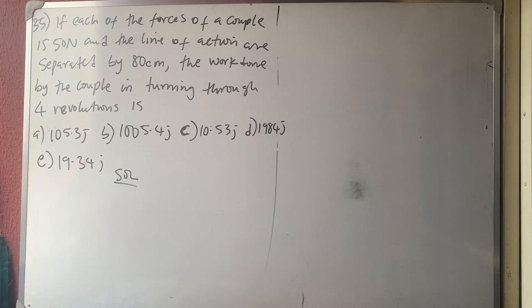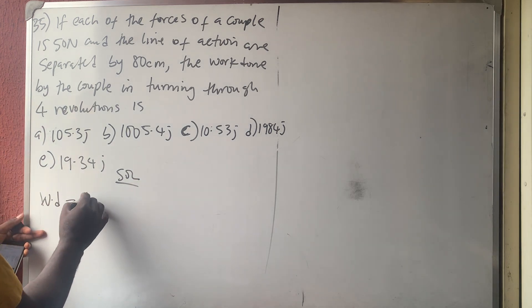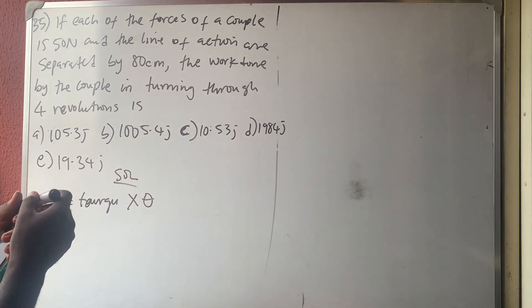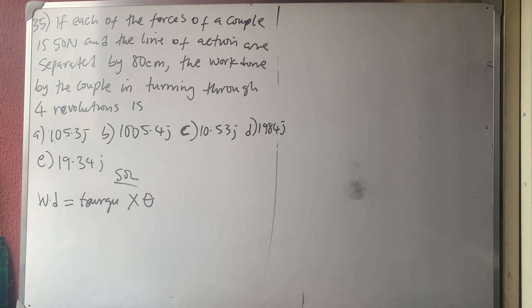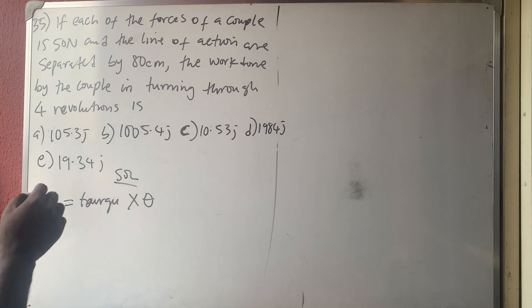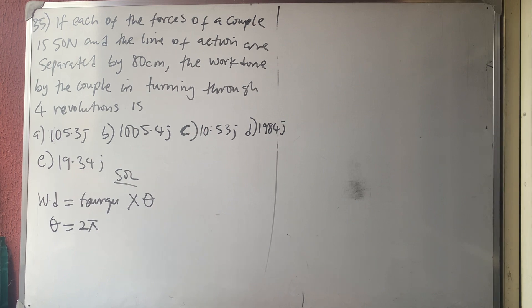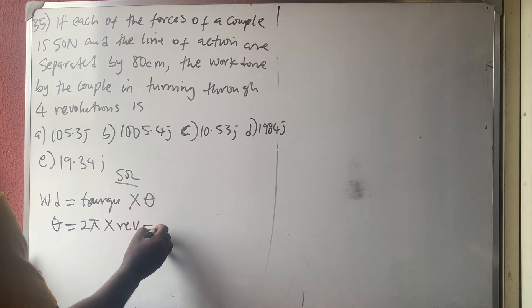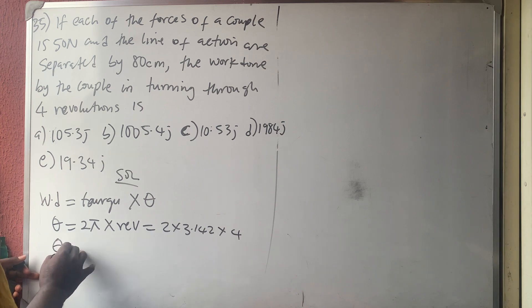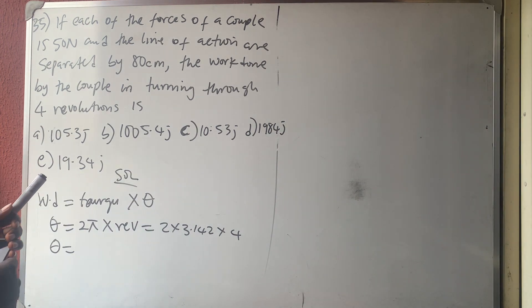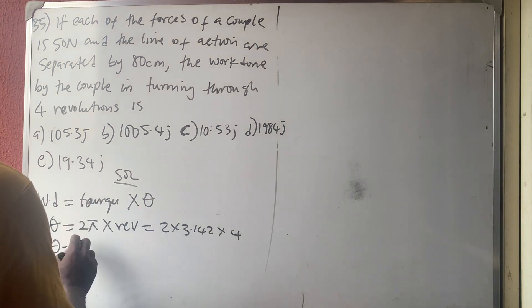Work done by a couple is given by τ × θ. The angle θ = 2π × number of revolutions = 2 × 3.142 × 4 = 25.136 radians.